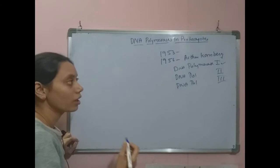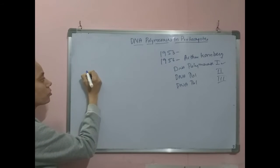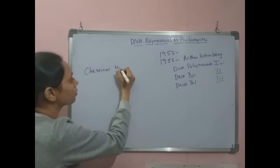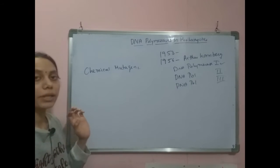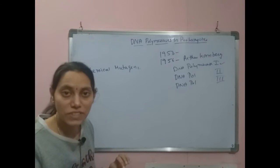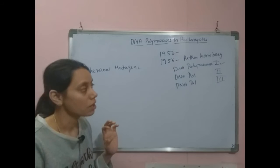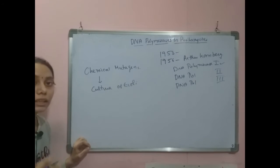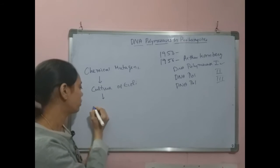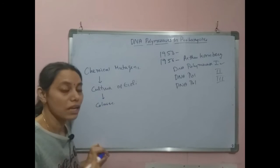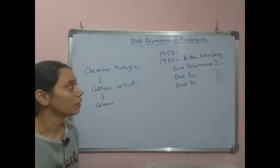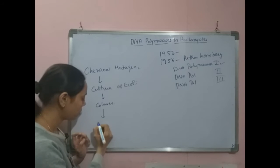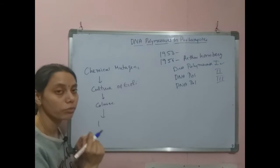To understand the functions of these polymerases, scientists used mutagenesis — that is, chemical mutagens, which are chemicals that cause mutations in DNA. These powerful chemical mutagens were added to cultures of E. coli so that the cells became mutated. The isolated colonies were then analyzed for the presence of different mutations, and thousands of such colonies were isolated and analyzed. From these, they discovered colonies carrying mutations in specific polymerase genes.